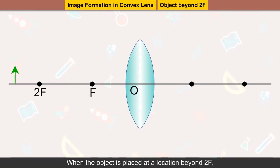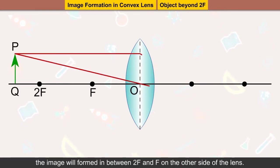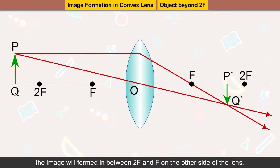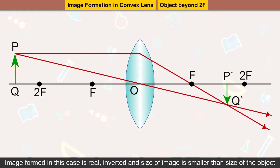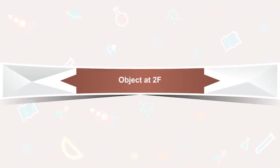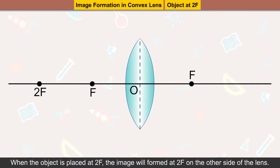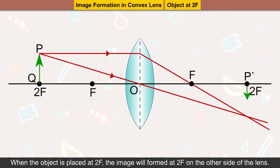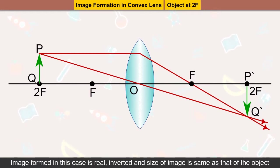Object beyond 2F: when the object is placed at a location beyond 2F, the image will be formed between 2F and F on the other side of the lens. The image formed in this case is real, inverted, and smaller than the object. Object at 2F: when the object is placed at 2F, the image is formed at 2F on the other side of the lens and is real, inverted, and the same size as the object.